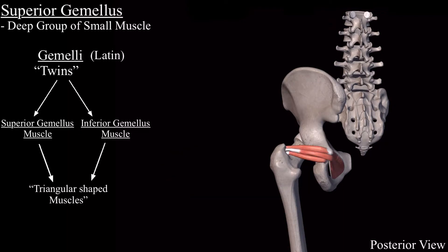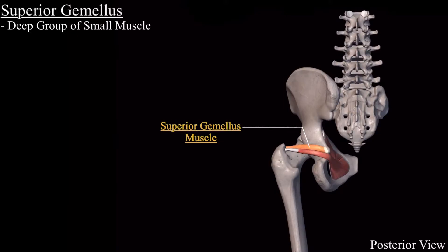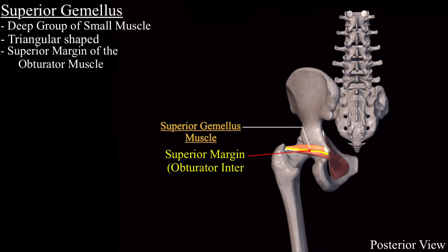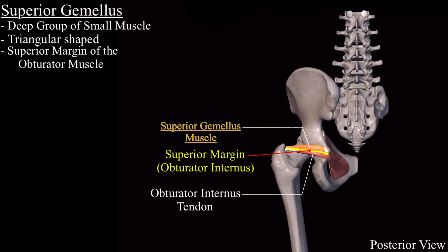In this video we will limit our discussion to the superior gemellus muscle. The superior gemellus muscle is a triangular shaped muscle and it is present along the superior margin of the obturator internus tendon, and that's why it is called the superior gemellus muscle.